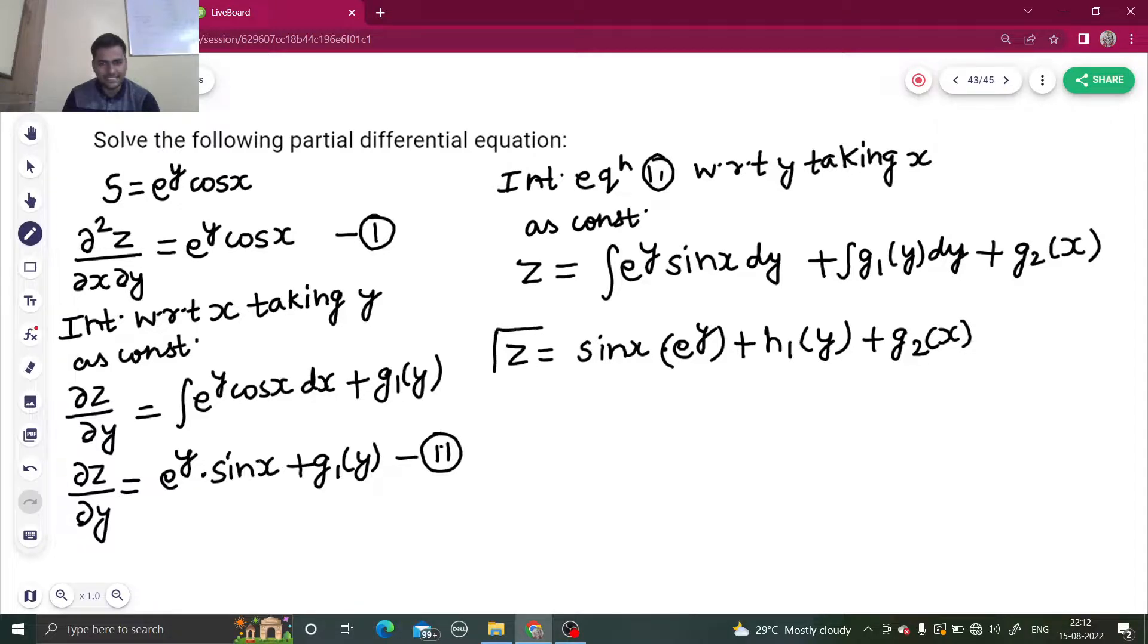Plus g₂(x). So that's it: z = sin x e^y + h₁(y) + g₂(x) is your final answer. Again, it was very simple. S we all know is ∂²z/∂x∂y, then integrate with respect to x to remove ∂/∂x. While integrating with respect to x, y is constant, so your constant of integration will be in terms of y.